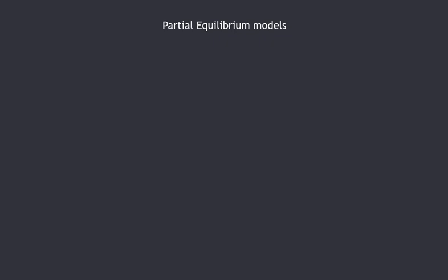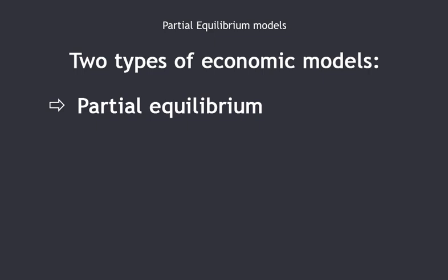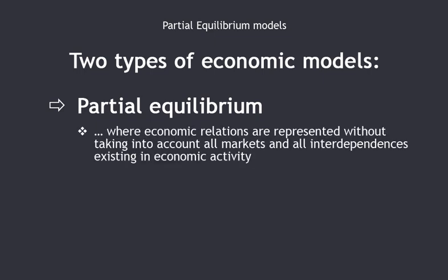During the two curricula you will follow this year, you will work on two types of economic models. The first type is partial equilibrium models, which are relatively simple compared to general equilibrium models in the sense that we do not take into account all markets and all interdependences existing in economic activity. For example, if we study the rice sector, we do not consider what's happening on the labour market or the land markets — we uniquely study the rice sector and neglect certain interdependences in the economy.